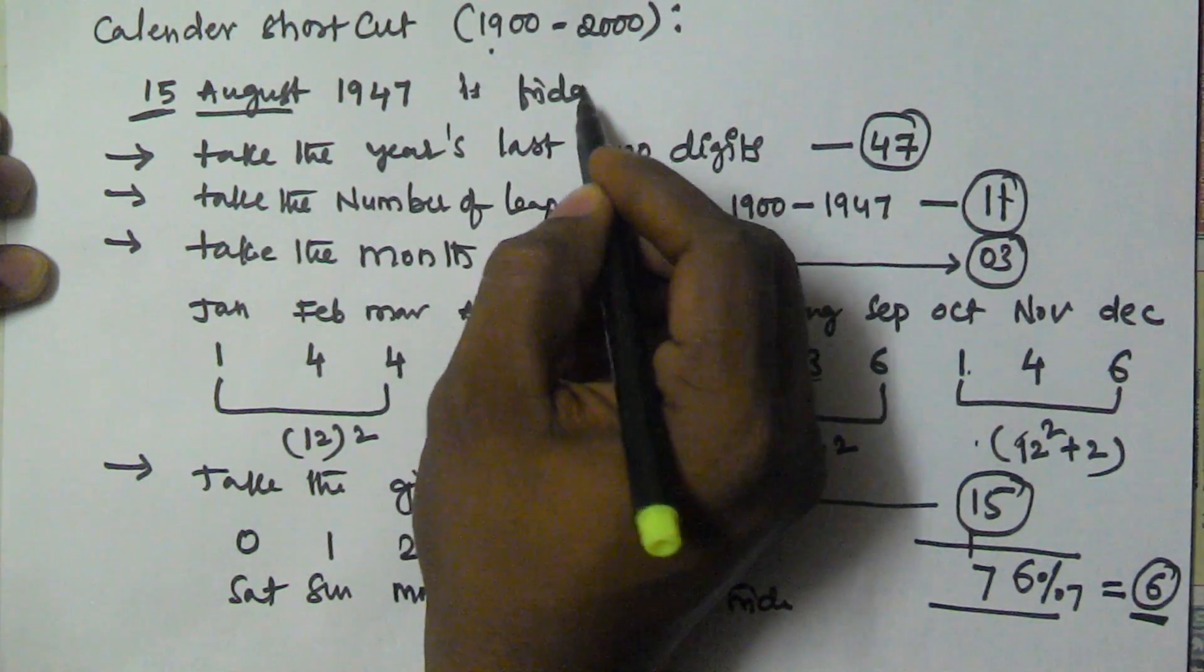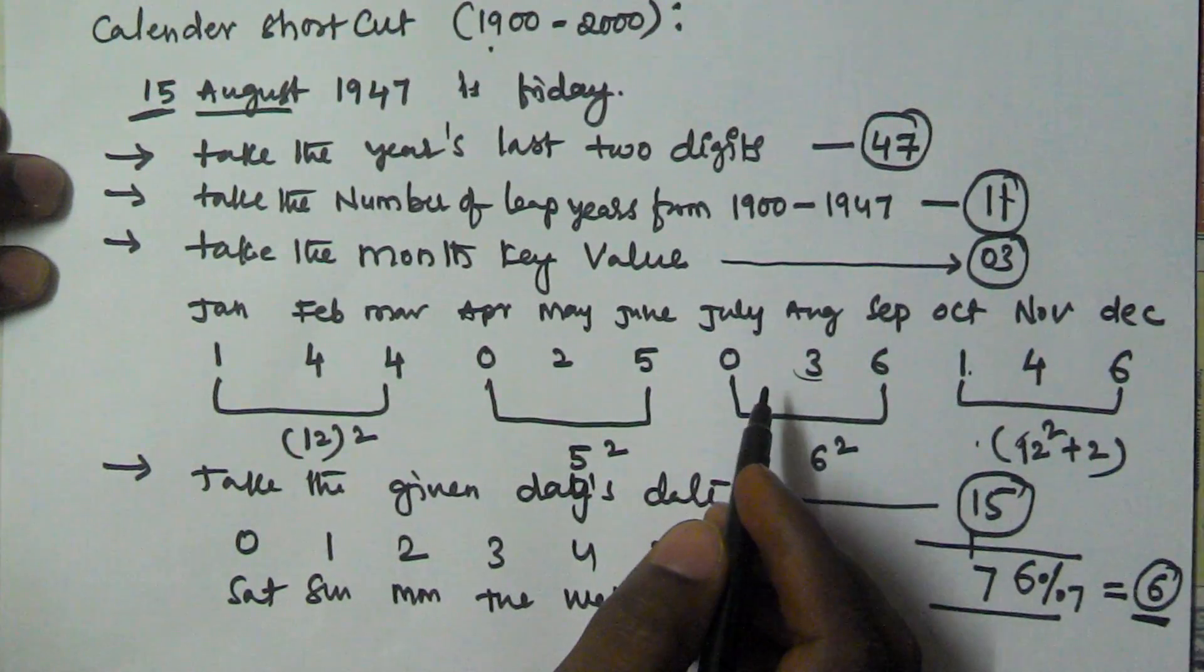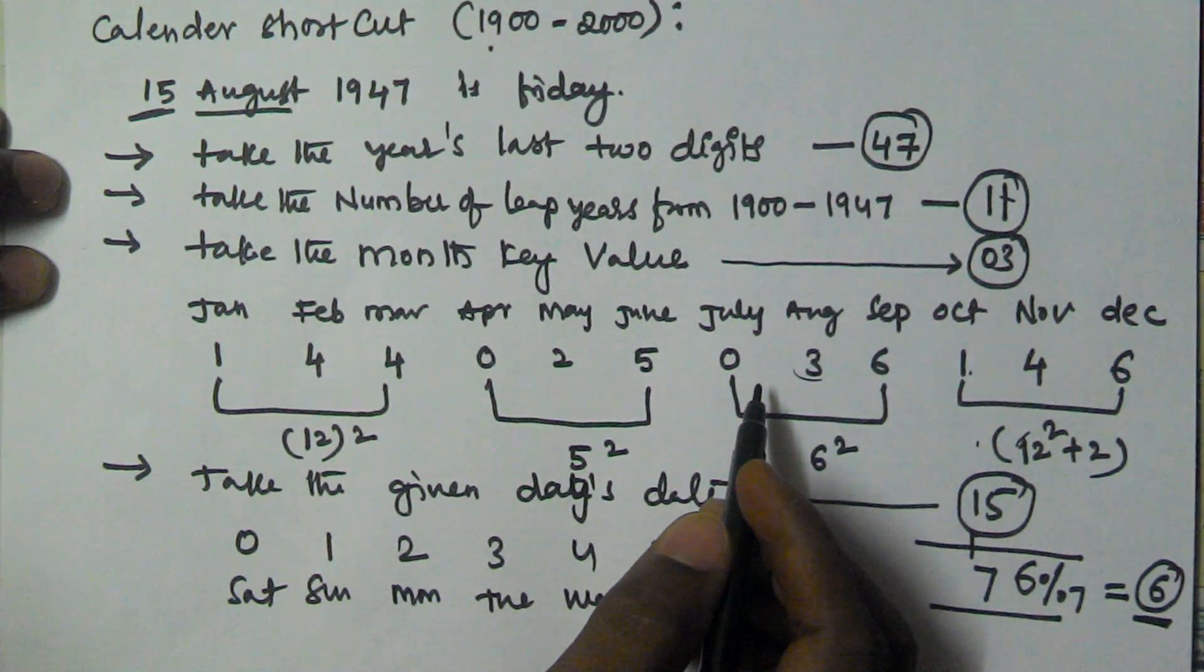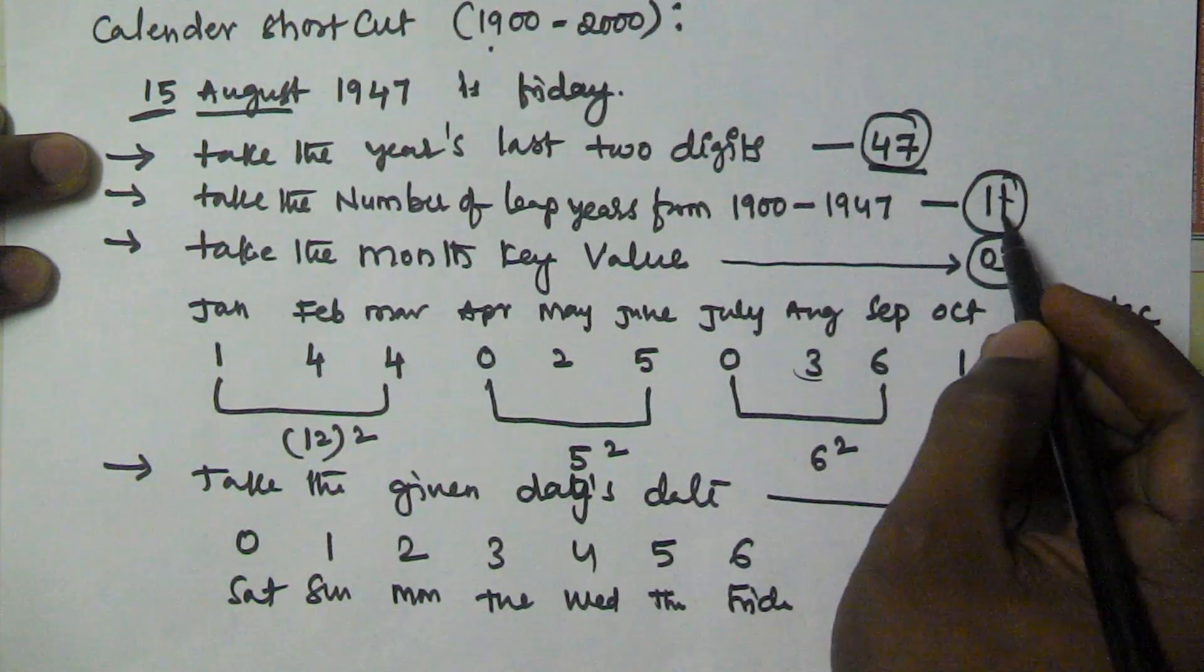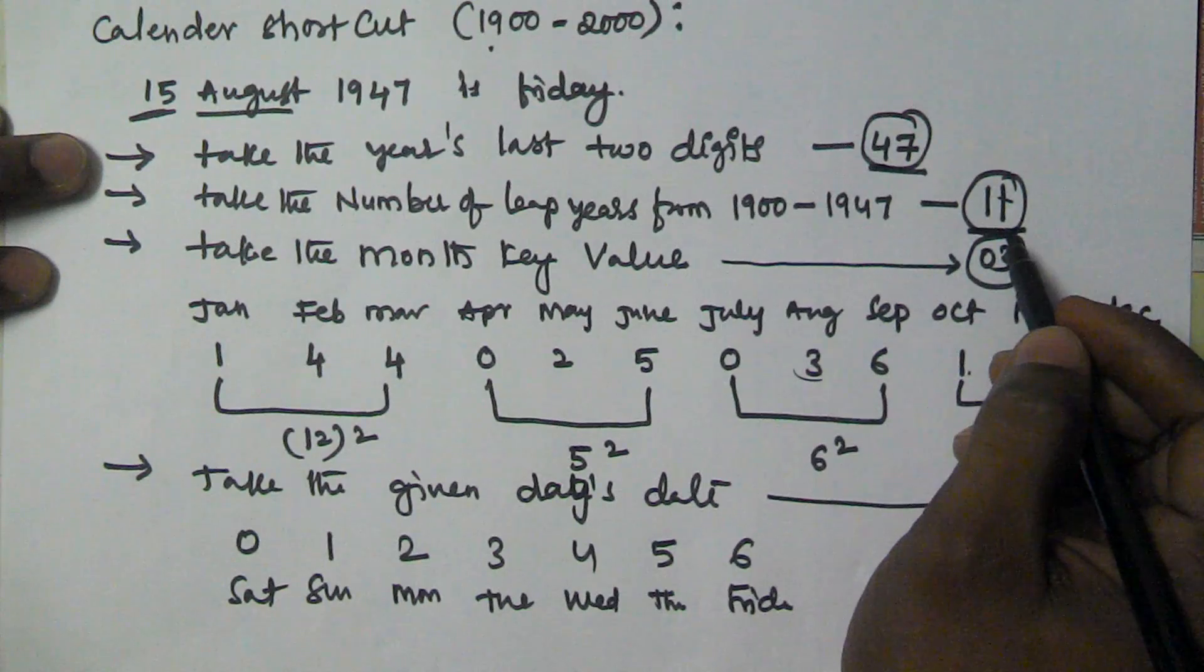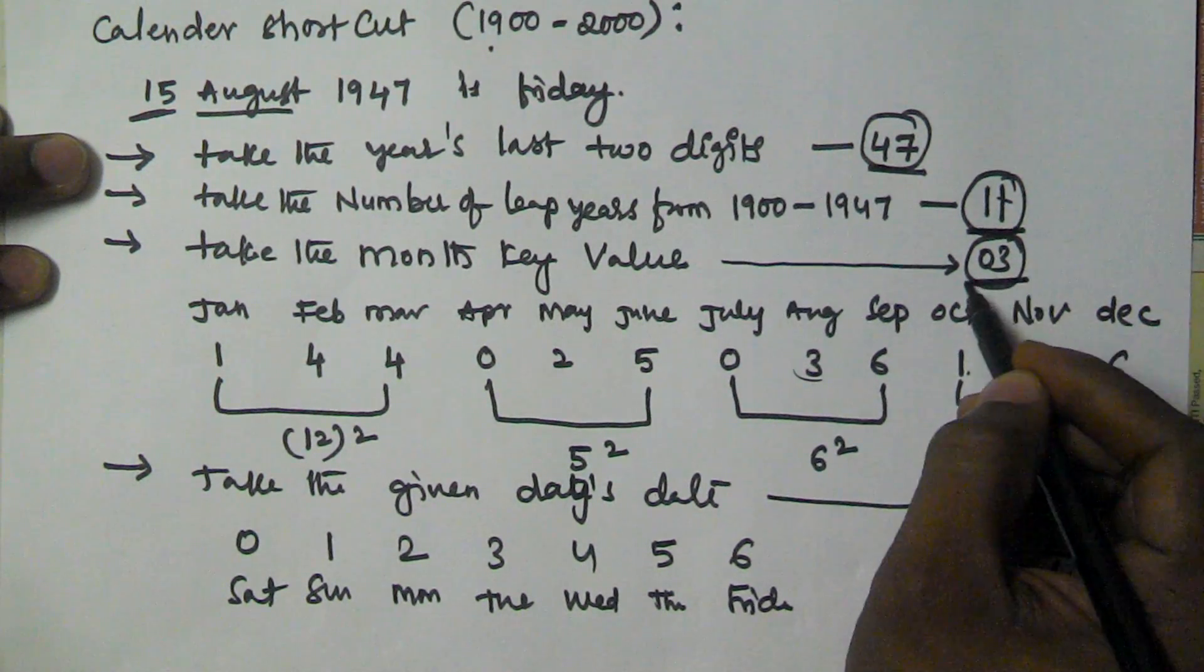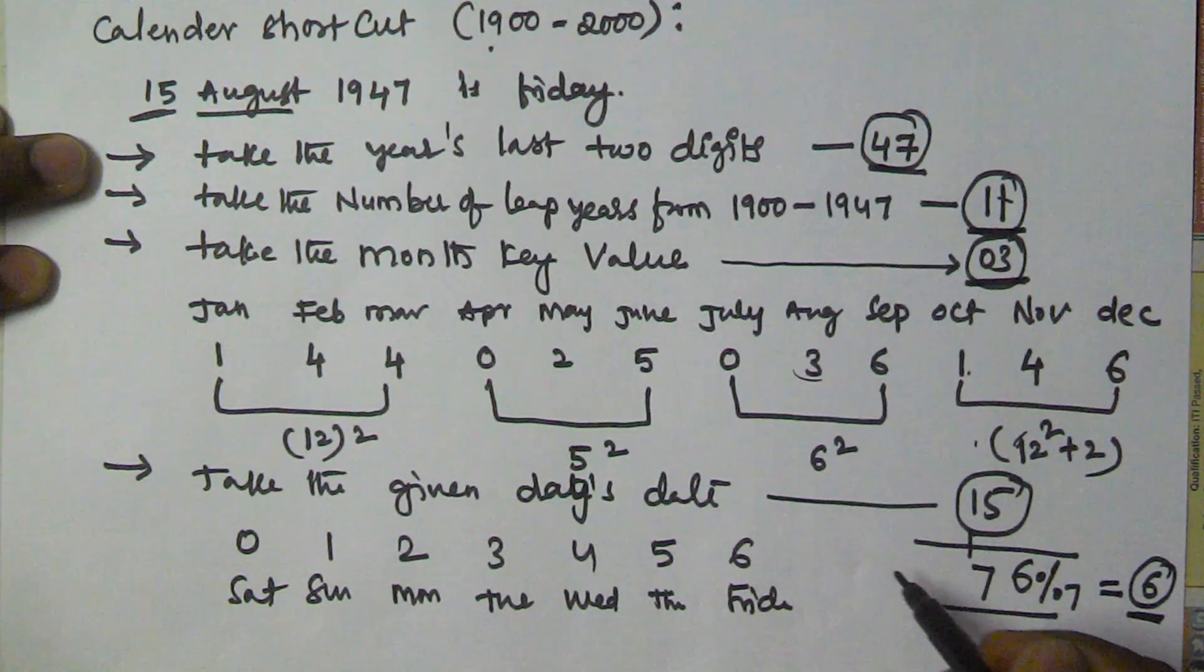This shortcut includes 4 steps: first one is taking the year, second one is taking the number of leap years from 1900 to given year, third one is taking the month key value, and fourth is taking the given date.